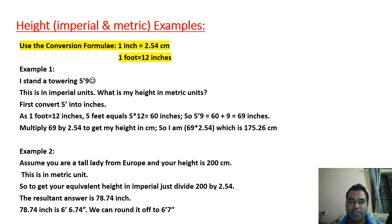So 78.74 inches we need to convert into feet and inches. So this will be 6 feet 6.74 inches. We can round this off to 6 feet 7 inches.